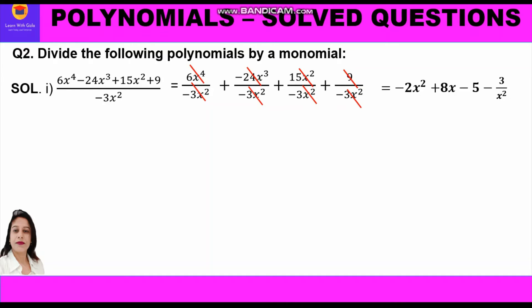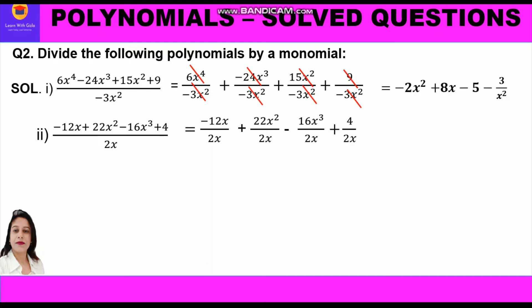The second part is (-12x + 22x² - 16x³ + 4) divided by 2x. Again there are four terms in the polynomial, so we split each term and divide by the monomial 2x: (-12x)/(2x) + (22x²)/(2x) + (-16x³)/(2x) + 4/(2x).